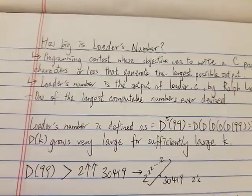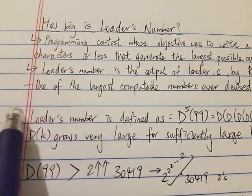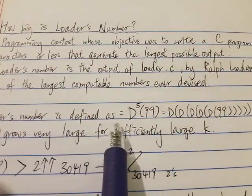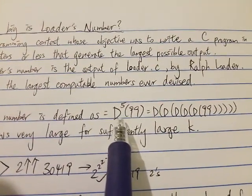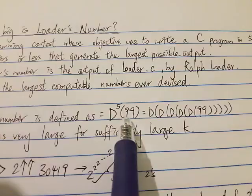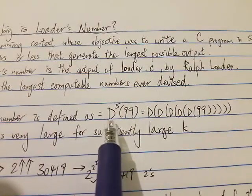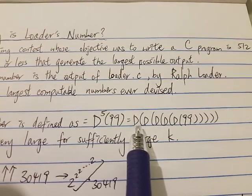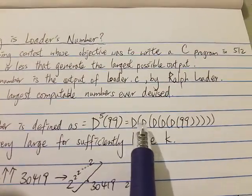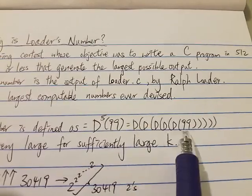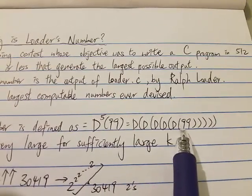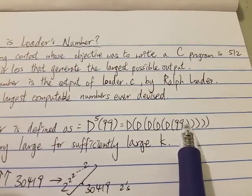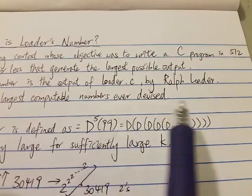So what is Loader's number? Loader's number can be defined as D^5(99). What does that mean? It means the D function iterated five times - you can see there are five Ds here, and at the end is the number 99.